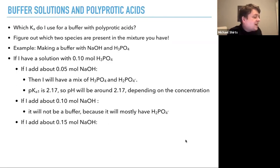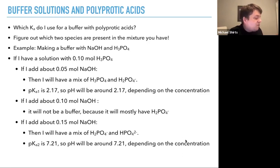However, if you add now about 0.15 moles sodium hydroxide, then you would have neutralized all of the phosphoric acid and a lot of the H2PO4 minus. And so you'll have a mix of H2PO4 minus and HPO4 2-minus, and that will be a buffer. The pKa2 is around 7.21. So the pH of this buffer solution will be around 7.21, depending on what the concentrations are.